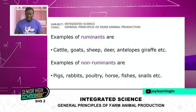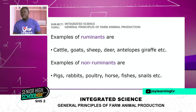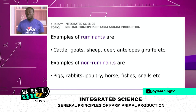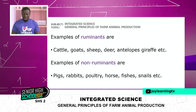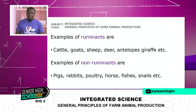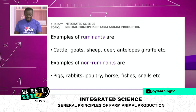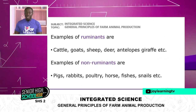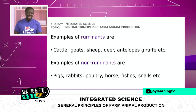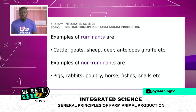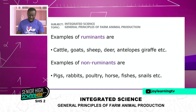Some people raise animals like the deer or the antelopes, as well as giraffes — normally seen in a zoo setting. Examples of non-ruminants are pigs, rabbits, poultry, horses, fishes, and snails. A pig is not a ruminant, a fish is not a ruminant, a horse is not a ruminant, and rabbits and poultry are all not ruminants, because they don't have four stomach chambers and they do not chew their cud.